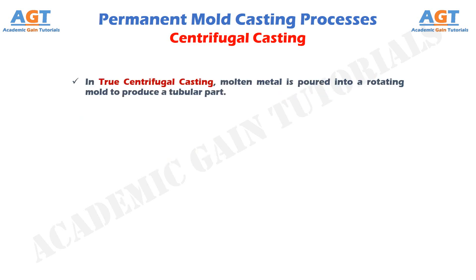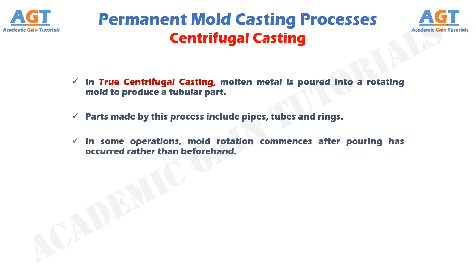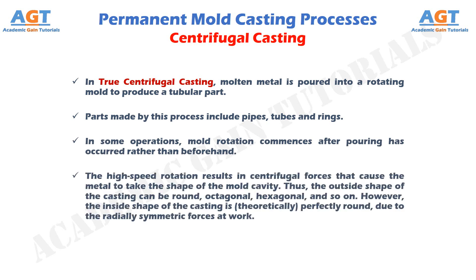In true centrifugal casting, molten metal is poured into a rotating mold to produce a tubular part. Parts made by this process include pipes, tubes, and rings. In some operations, mold rotation commences after pouring has occurred rather than beforehand. The high speed rotation results in centrifugal forces that cause the metal to take the shape of the mold cavity. Thus, the outside shape of the casting can be round, octagonal, hexagonal, and so on. However, the inside shape of the casting is perfectly round, due to the radially symmetric forces at work.